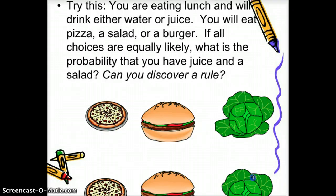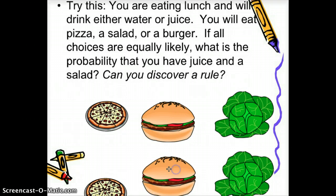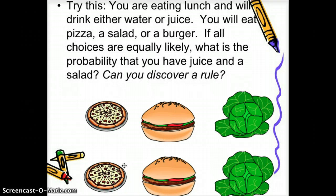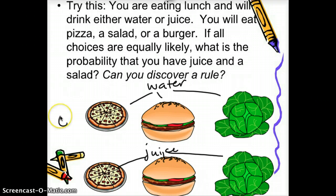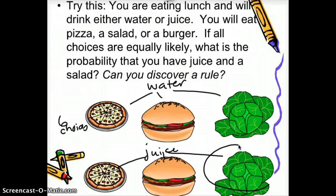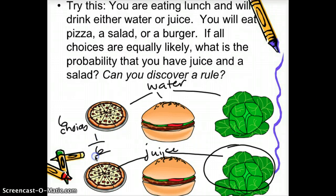A diagram or list might be helpful here. We have pizza, salad, and burger, and with each of those we could have water or juice. So water goes with any of the three options, and juice also goes with any of the three options. We have six choices altogether, and one of those choices is juice and a salad.